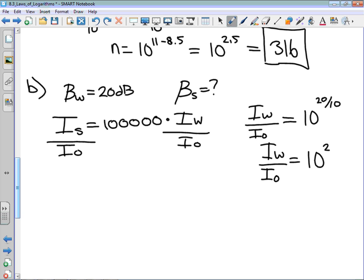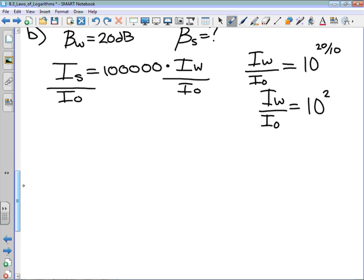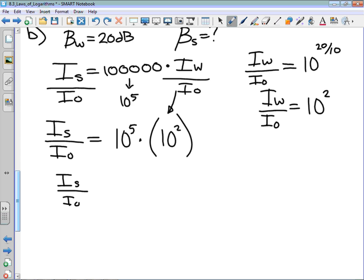This is going to allow me to solve for IS over I0. I'm going to change 100,000 into 10 to the power of 5. The intensity of my safe sound related to I0 is going to be 10 to the power of 5 multiplied by 10 to the power of 2, which is the intensity of our whisper compared to I0. So I get that the intensity of my safe sound is equal to 10 to the power of 7.